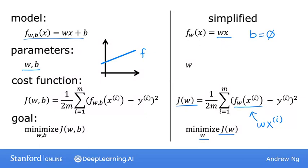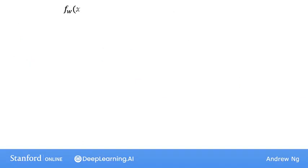To see this visually, when b is set to zero, f defines a line that passes through the origin, because when x is zero, f of x is zero too. Using this simplified model, let's see how the cost function changes as you choose different values for the parameter w. In particular, let's look at graphs of the model f of x and the cost function J, plotting these side by side so you can see how the two are related.